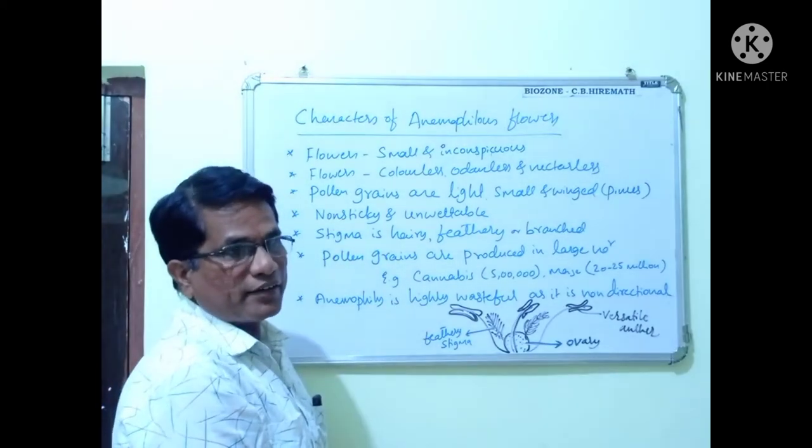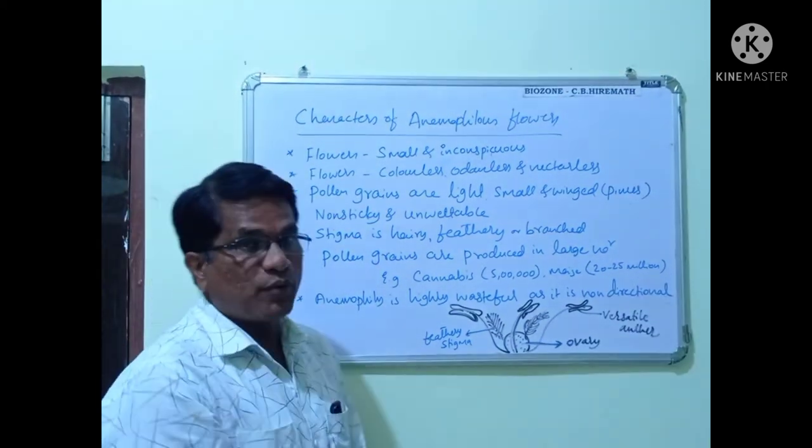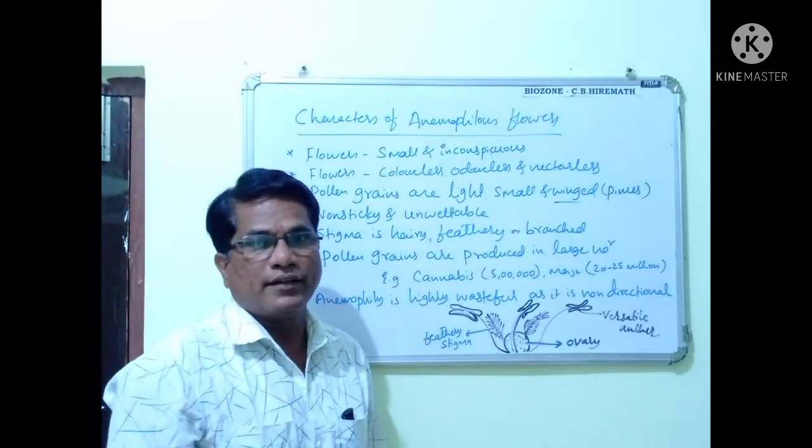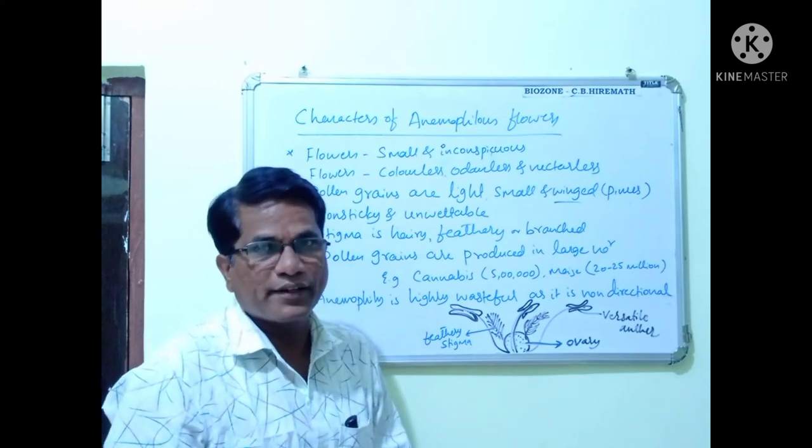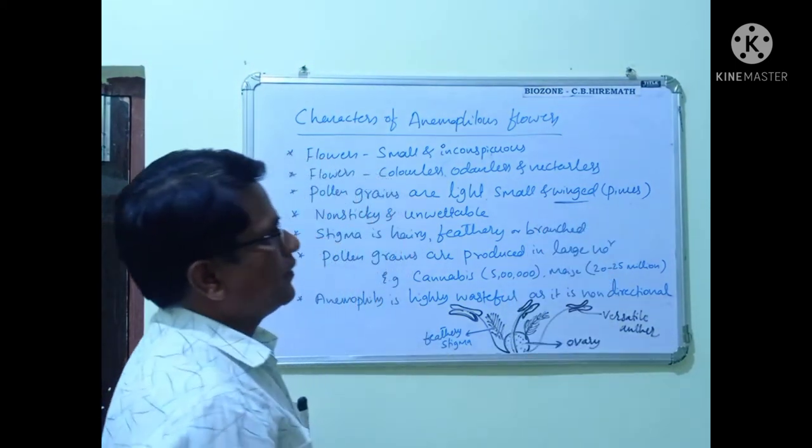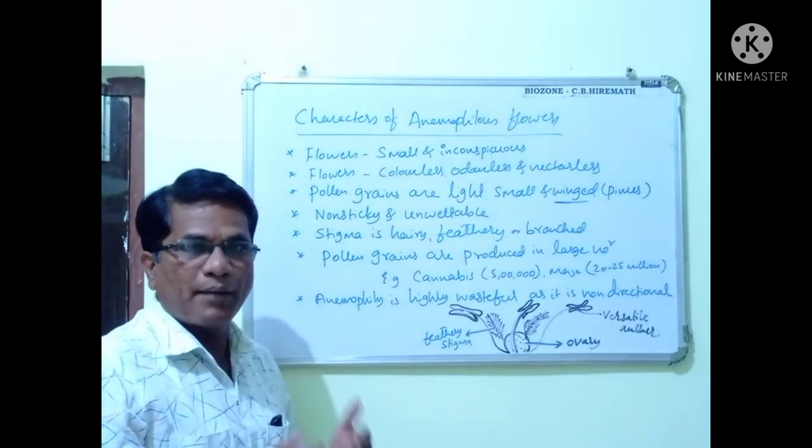Next, pollen grains are lightweight, small, and winged. Example: Pinus. You know in Pinus the pollen grains are winged, a specific example for winged pollen grains seen in Pinus, a member of Coniferopsida class.